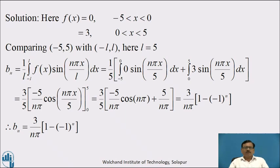I hope you have completed. Here f(x) = 0 when -5 < x < 0, and equal to 3 when 0 < x < 5. Now comparing -5 to 5 with -L to L, we get L = 5.